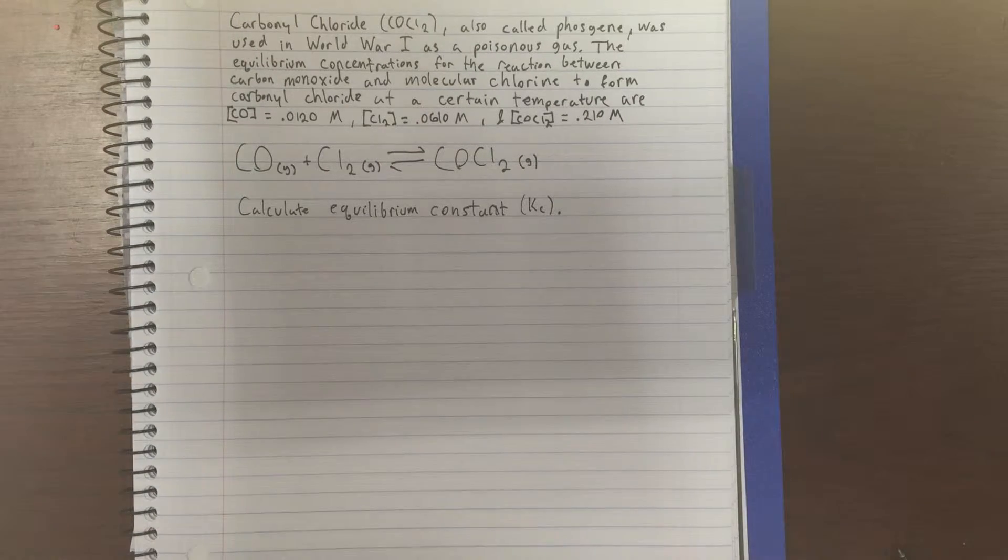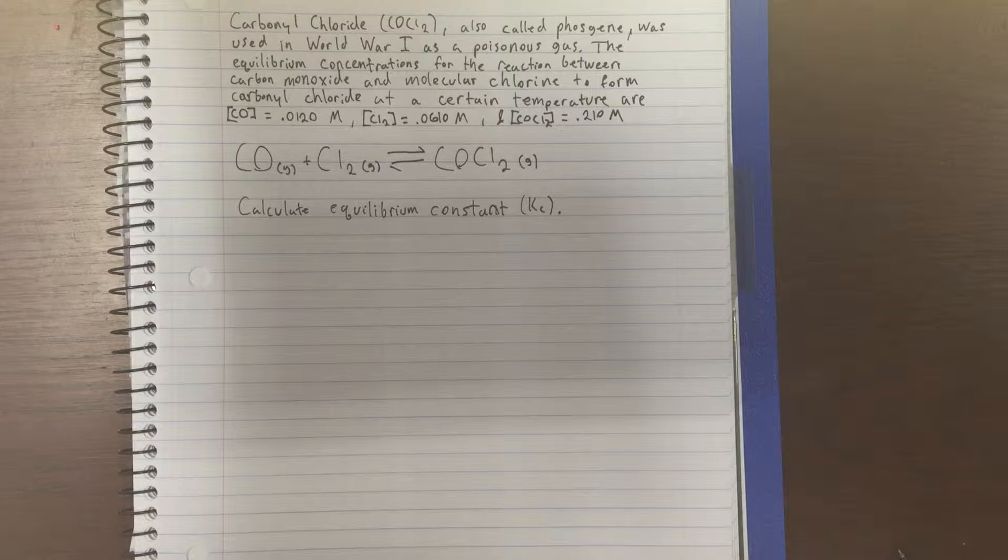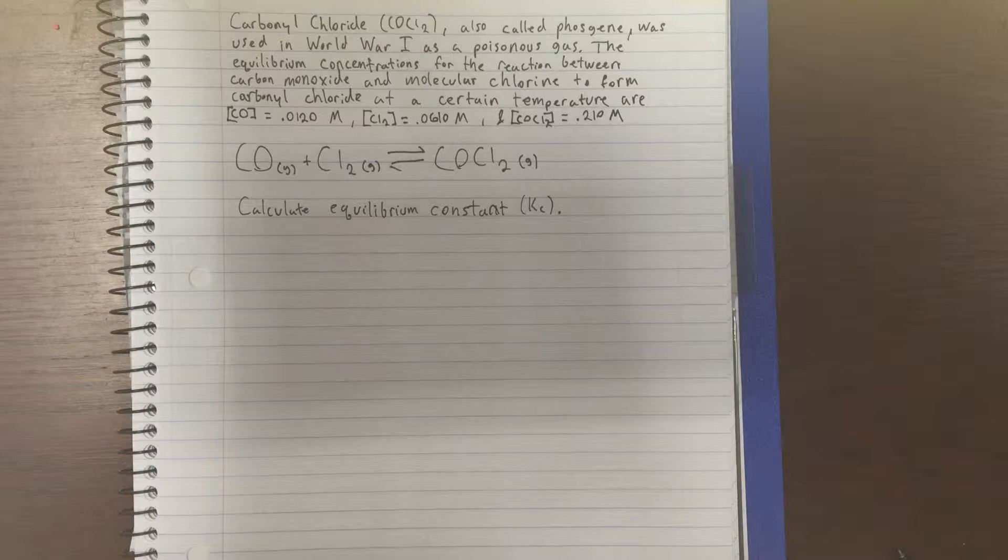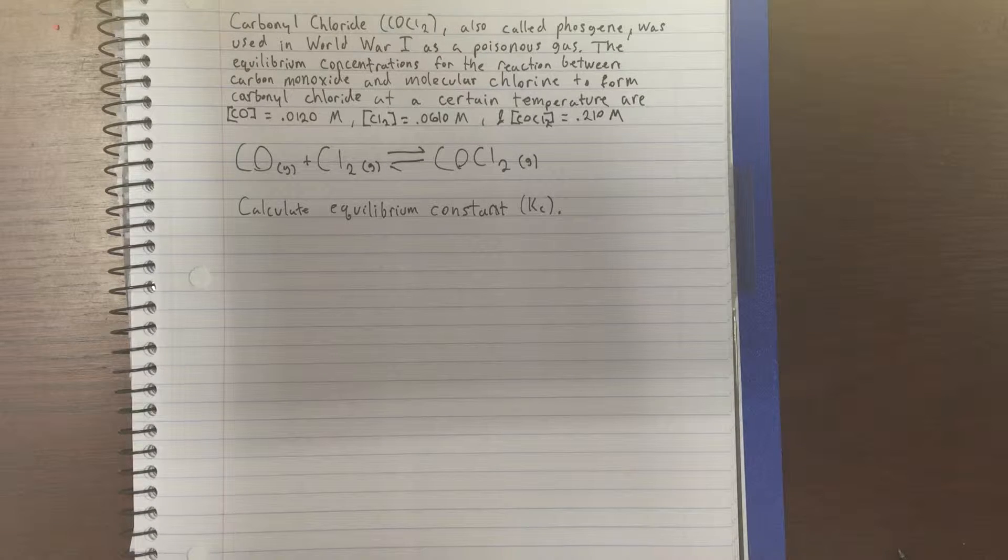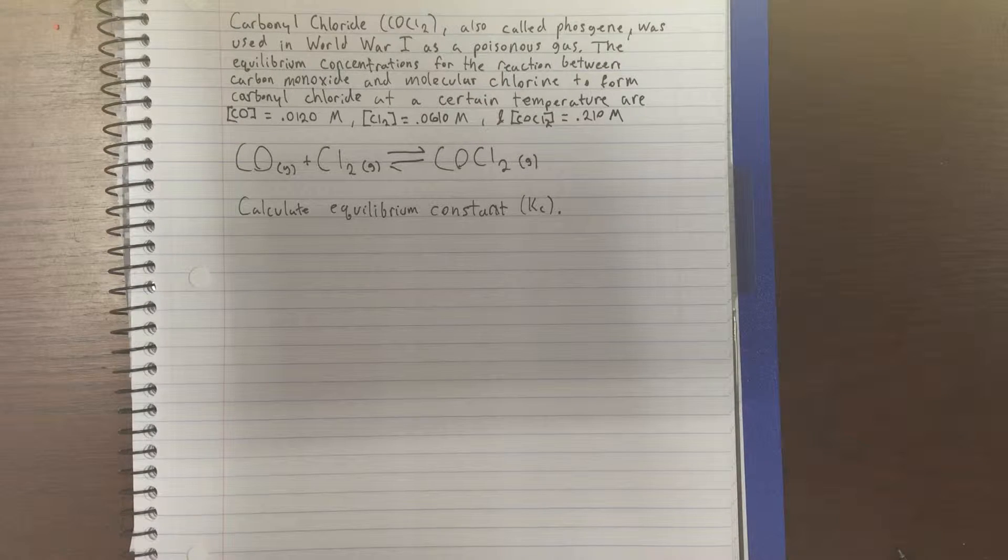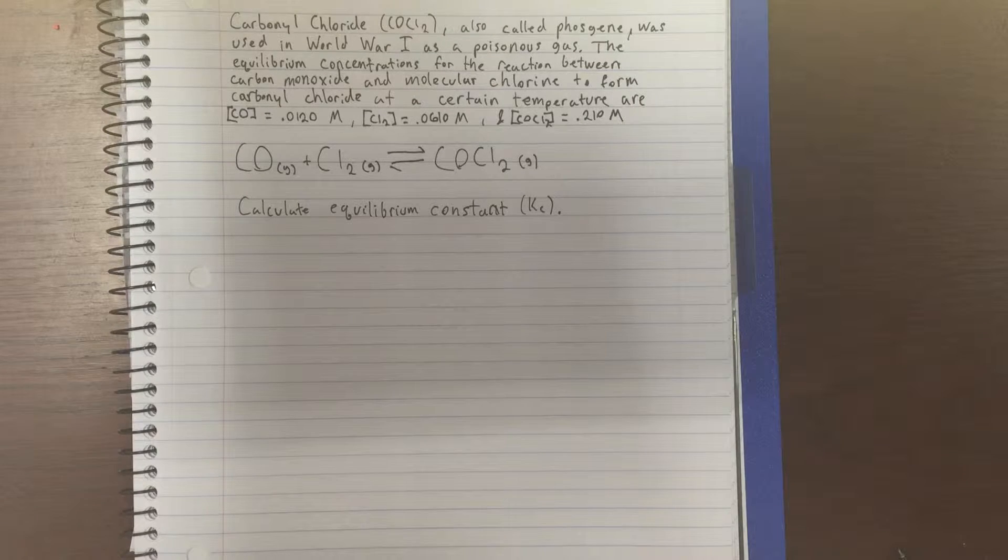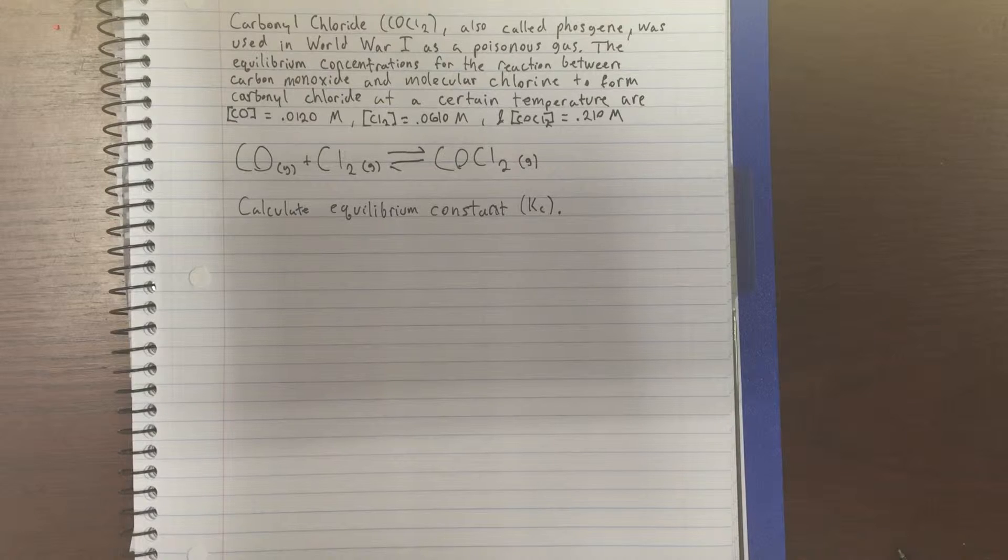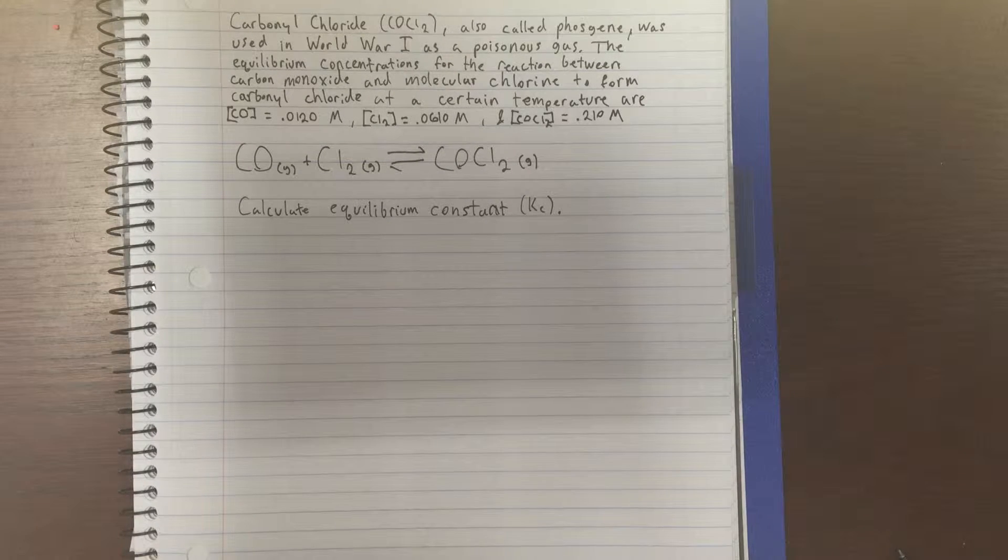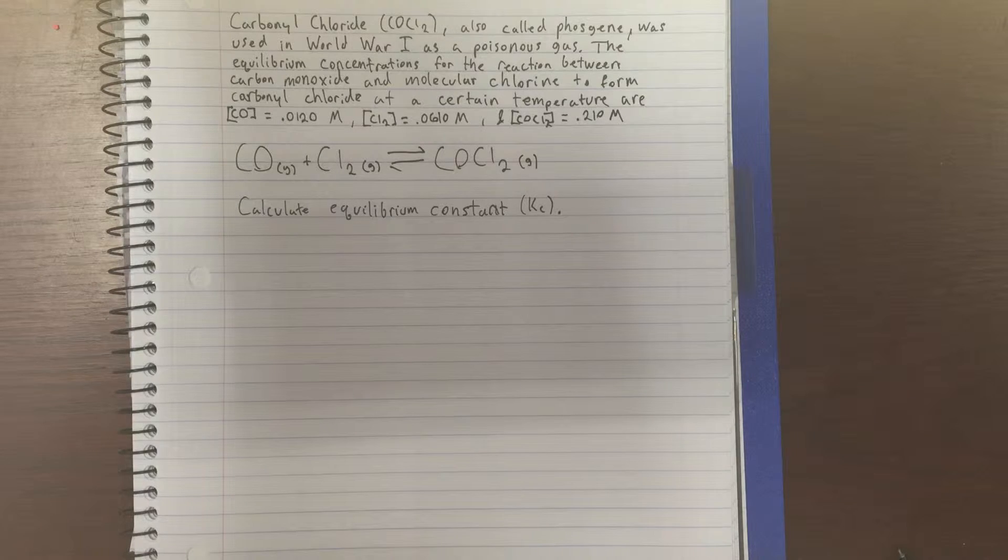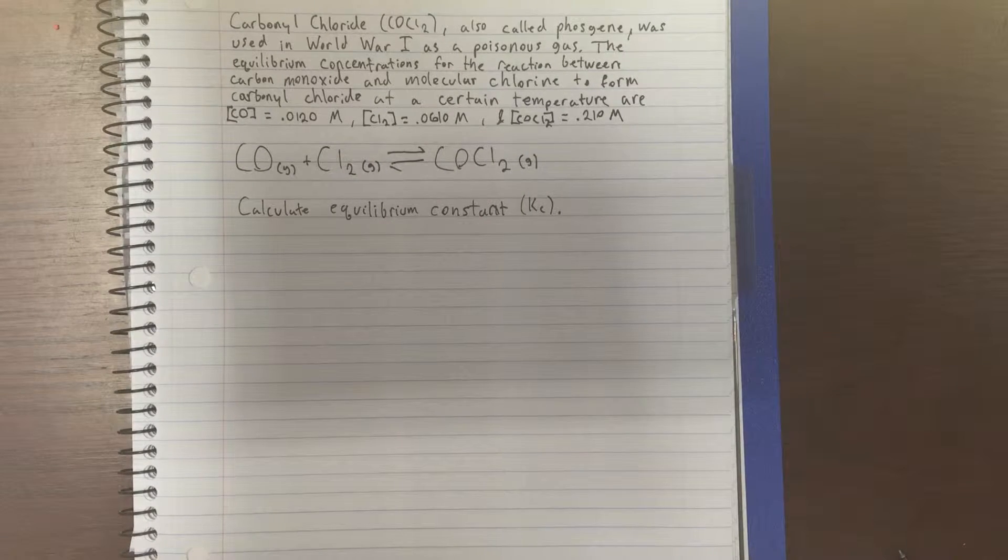Carbonyl chloride (COCl2), also called phosgene, was used in World War I as a poisonous gas. The equilibrium concentrations for the reaction between carbon monoxide and molecular chlorine to form carbonyl chloride at a certain temperature are: concentration CO equals 0.0120 molar, concentration Cl2 equals 0.0610 molar, and concentration COCl2 equals 0.210 molar.